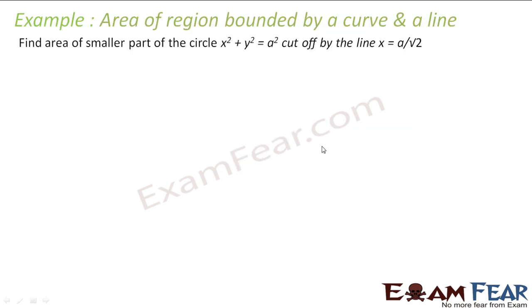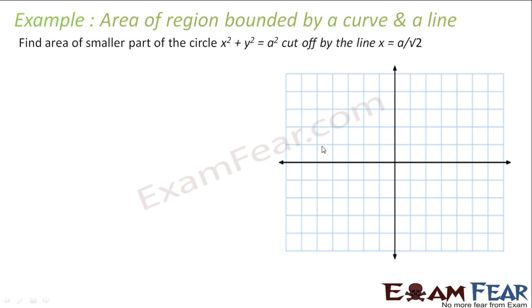In this question, we have to find the area of the smaller part of the circle x² + y² = a², that is a circle with center (0, 0) and radius a, cut off by the line x = a/2. So let us draw this.